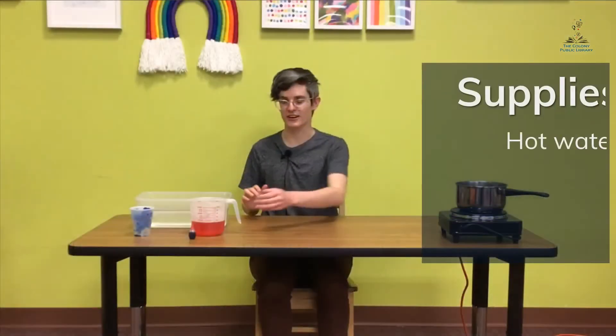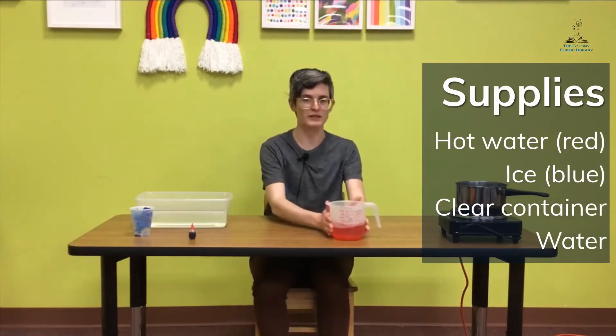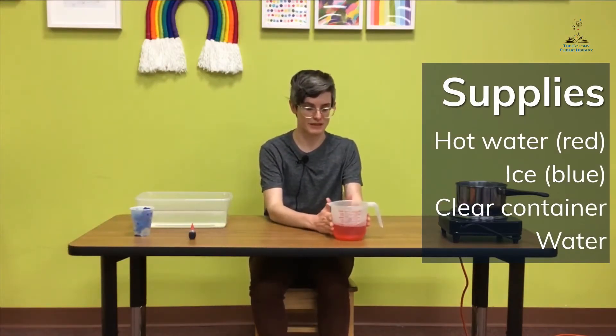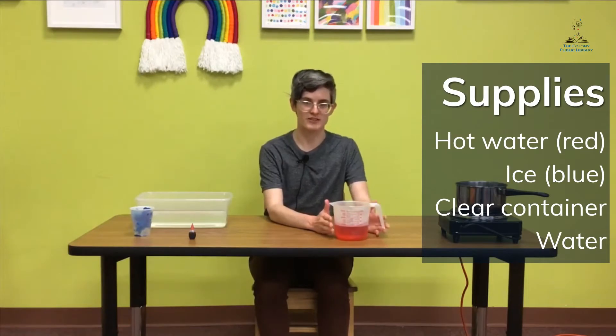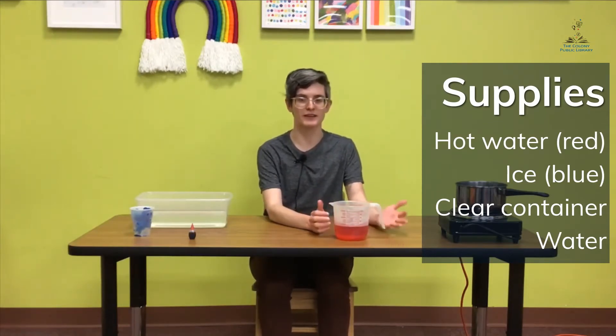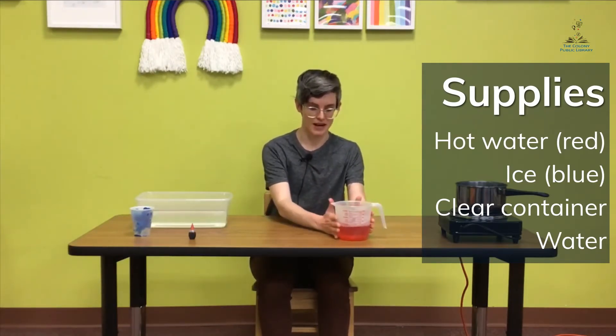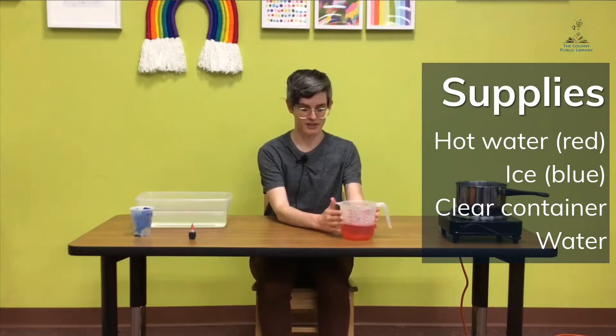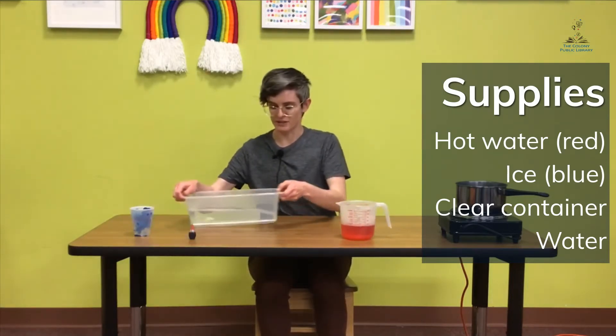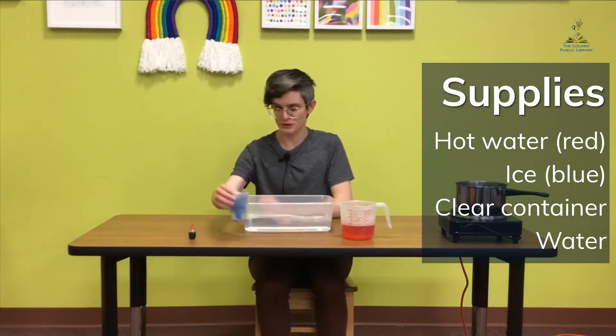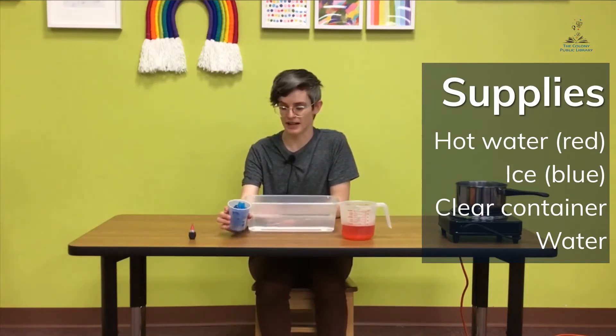Let's get started on our experiment today. We'll need some really warm water. This can be basically almost boiled. Please have an adult help you to boil some water either from a kettle or on the pot, and we will dye it red with red food coloring. And we also need some blue ice.